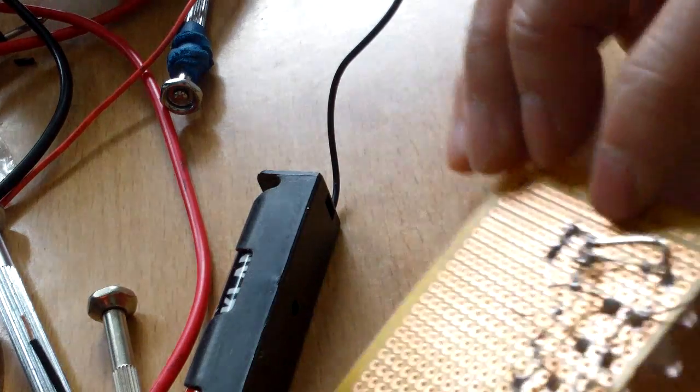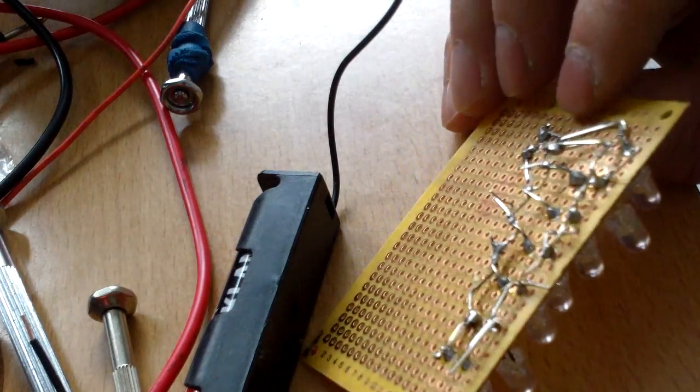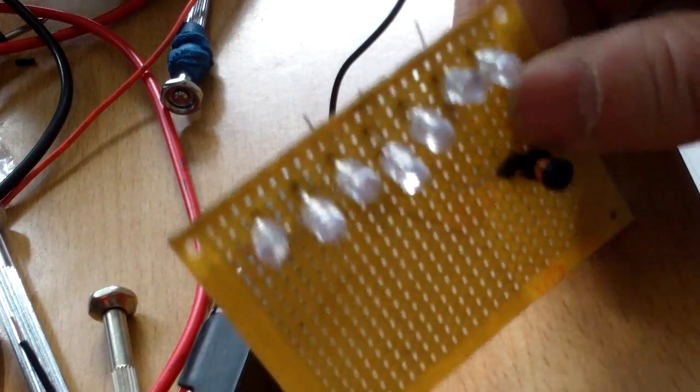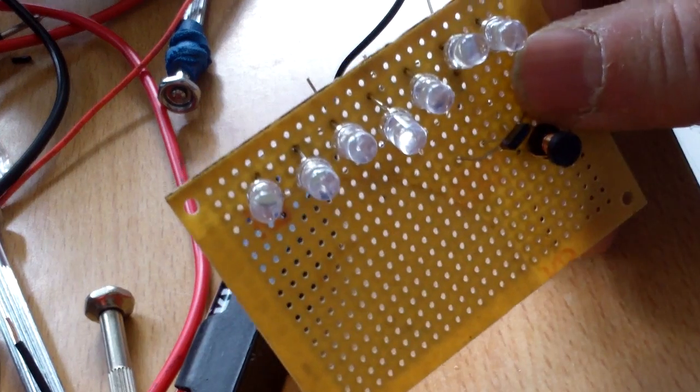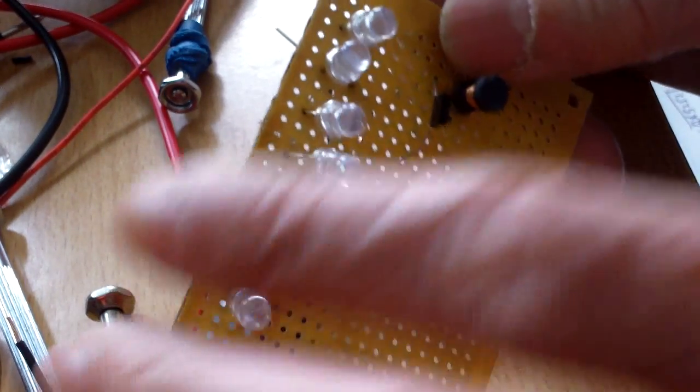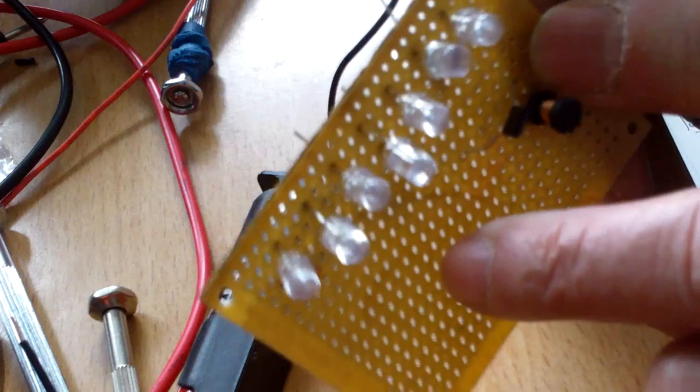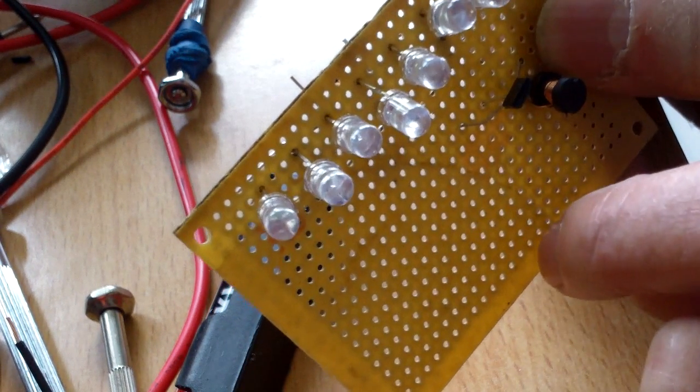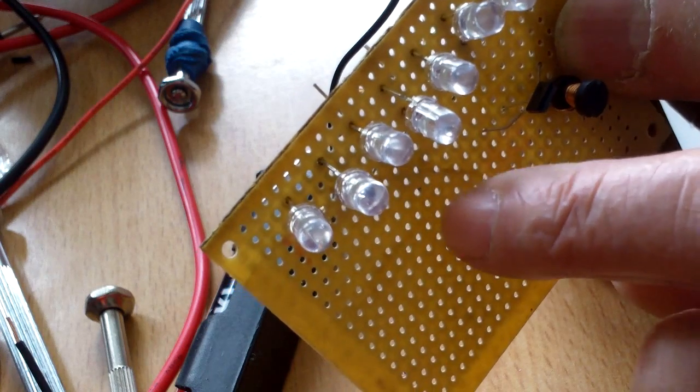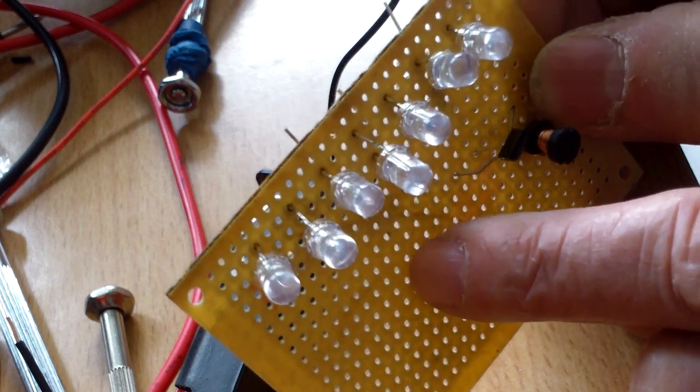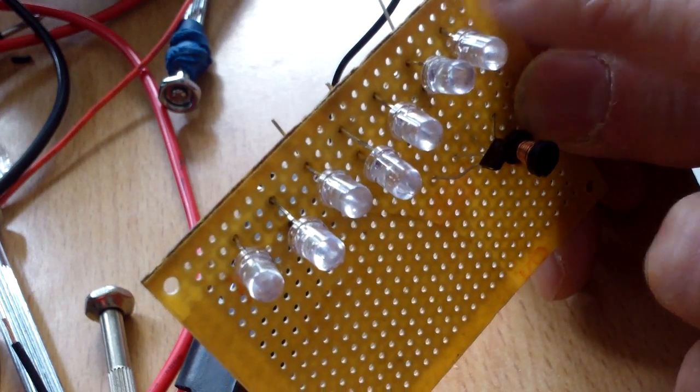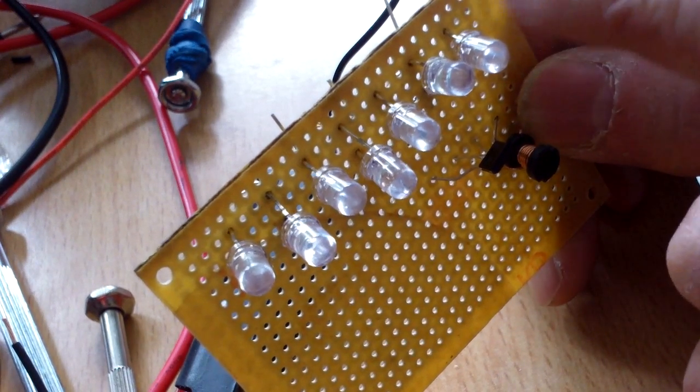Right now I'm just going to finish up soldering. The case, I don't know what to use. I will probably use a bottle like I did with my other solar light. I'm going to use a glass bottle because it's weatherproof. If I put it in a plastic box and put it outside, it's not going to last.